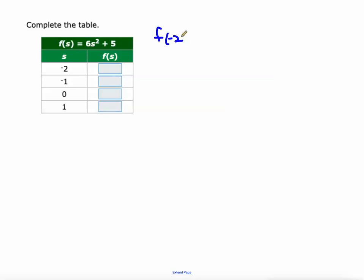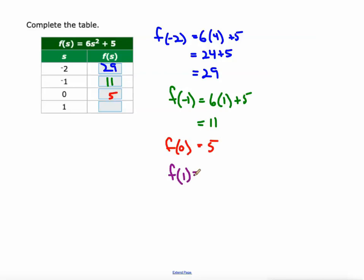So f of negative 2 is 6 times negative 2 squared which is 4 plus 5, so it's 24 plus 5 which is 29. At negative 1 it would be 6 times negative 1 squared, or 6 times 1, because negative 1 squared is 1. And 6 times 1 is 6 plus 5 is 11. F at 0 we know 0 squared is 0, and 0 times 6 is 0, and plus 5 is gonna be 5.